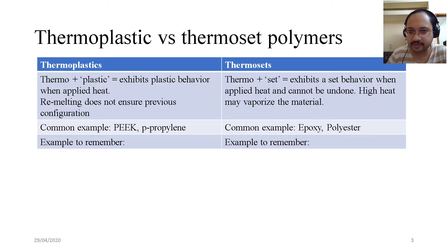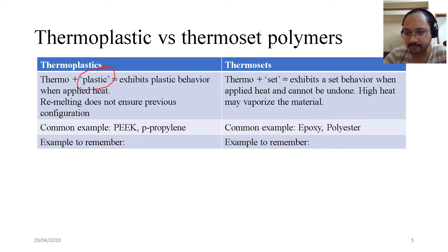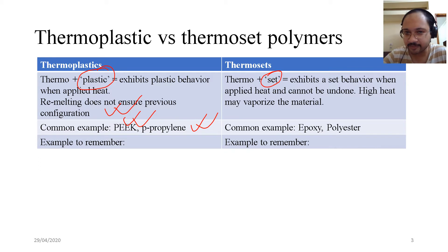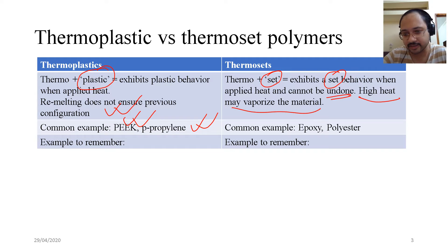Coming to thermoplastic versus thermoset polymers. As the name says, thermoplastic means it exhibits plastic behavior when heat is applied — it softens and melts, but re-melting does not restore the previous configuration. Examples include polypropylene and polyether ether ketone. For thermosets, the word 'set' means it exhibits a set behavior when heat is applied and cannot be undone. High heat may vaporize the material. Common examples are epoxies and polyesters.